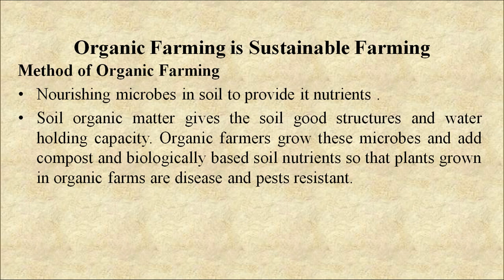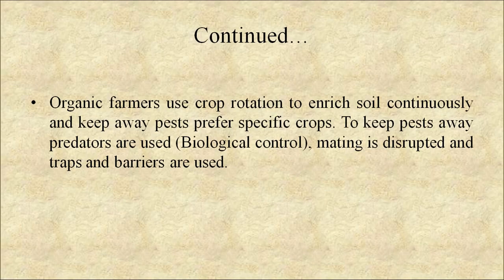Now come to the methods of organic farming. Nourishing microbes in soil to provide nutrients is key. Soil organic matter gives the soil good structure and water holding capacity. Organic farmers grow these microbes and add compost and biologically-based soil nutrients so that plants grown in organic farms are disease and pest resistant. Organic farmers use crop rotation to enrich soil continuously and keep pests away, prefer specific crops to deter pests, use natural predators, disrupt mating, and use traps and barriers.